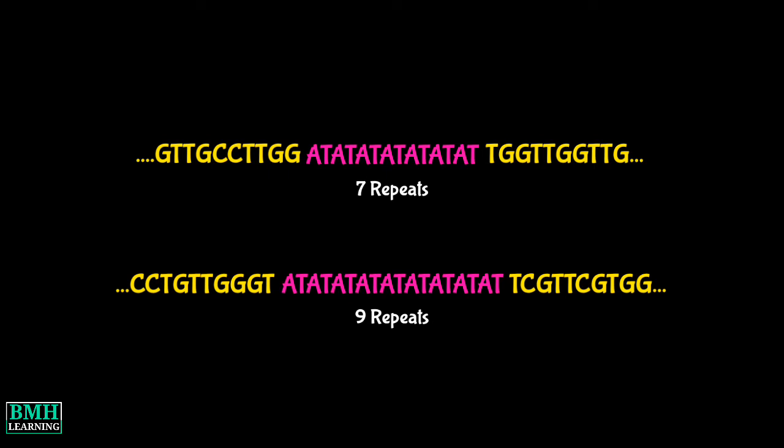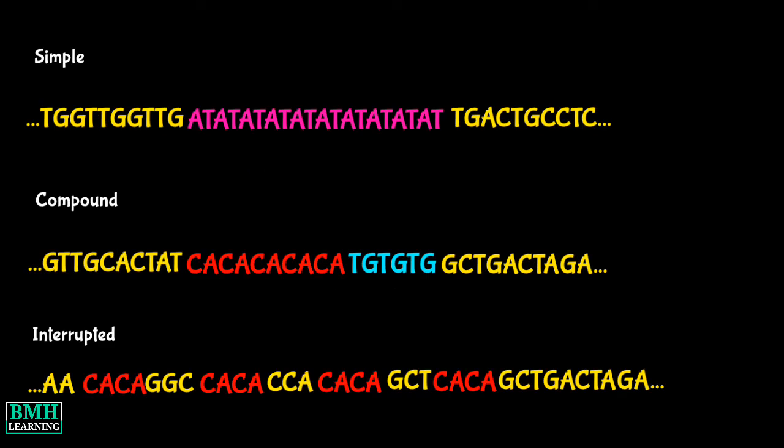As shown in the diagram, SSRs can be simple, compound, or interrupted. In simple SSRs, only one type of repeat is seen. In the case of compound SSRs, more than one type of repeat is found. Lastly, interrupted SSRs have random nucleotides sandwiched between the repeating units, interrupting the SSRs.